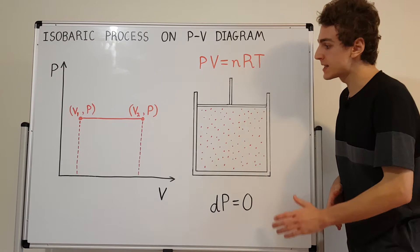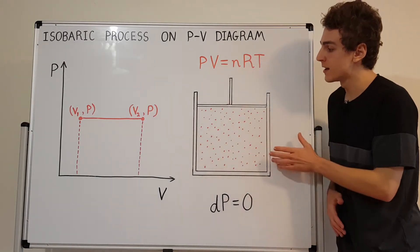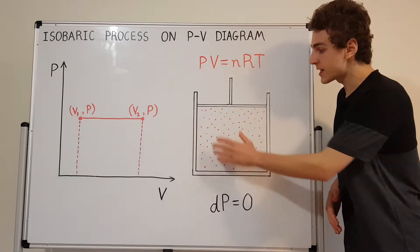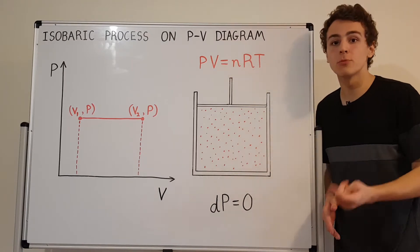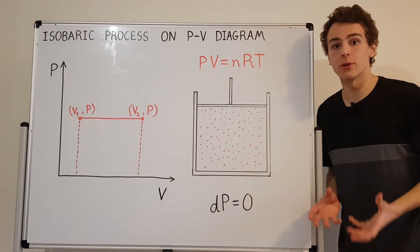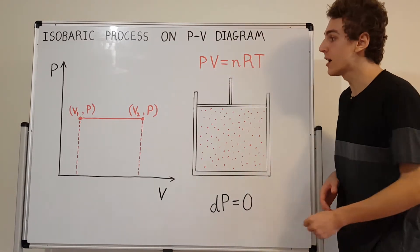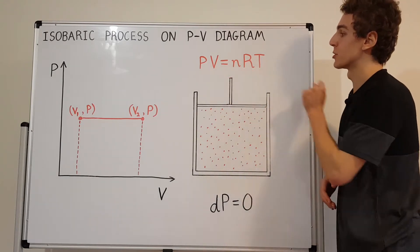Let's take the example of some enclosed gas with a piston. This gas has certain measurable macroscopic quantities: pressure, volume, number of moles, and temperature.